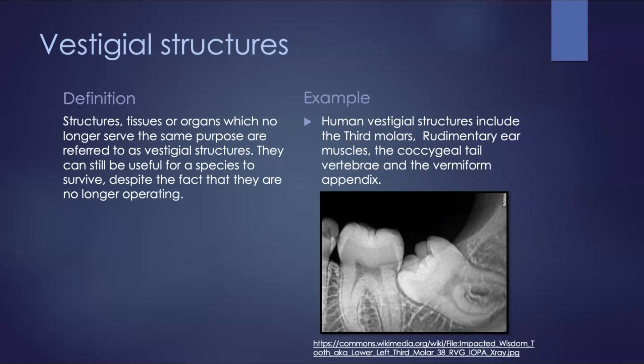Humans today prepare food by softening it, allowing us to cut food with utensils. Rudimentary ear muscles are weak muscles that would once have enabled evolutionary ancestors to move their ears in order to capture sound more effectively. These muscles, however, are not capable of moving much today, thus being useless.